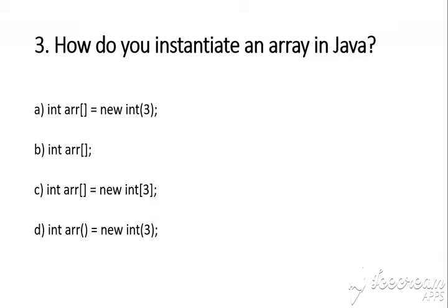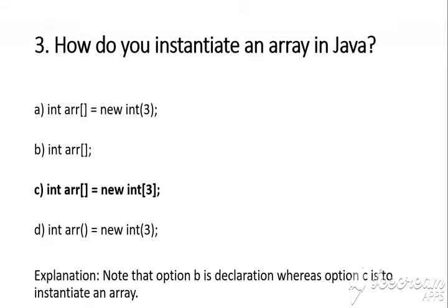Question number 3: How do you initialize an array in Java? The answer is C, that is: int array[] = new int[3]. Here 'new' is the keyword, 'int' is the data type, and 3 is the size of the array. Note that option B is a declaration — when we just want to declare the array in Java we use option B: int array[]. Option C is used to initialize an array in Java.